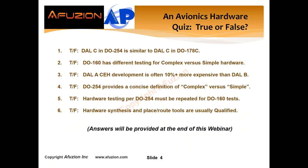Now our quiz. Number one: DAL-C in DO254 is similar to DAL-C in DO178C — true or false? Number two: DO160 has different testing for complex versus simple hardware — true or false? We'll provide the answers in just 40 minutes. Number three: DAL-A development of complex electronics hardware is often 10% or more expensive than DAL-B. Number four: DO254 provides a concise definition of complex versus simple. Number five: hardware testing per DO254 must be repeated for DO160 tests — true or false? Number six: hardware synthesis and place-and-route tools are usually qualified.